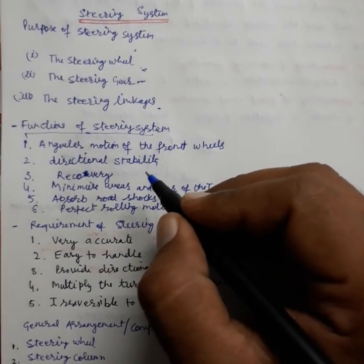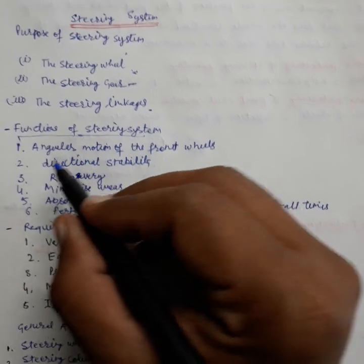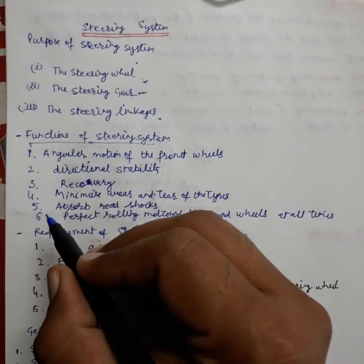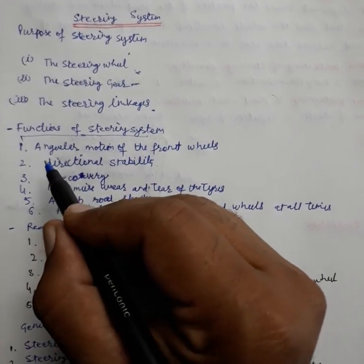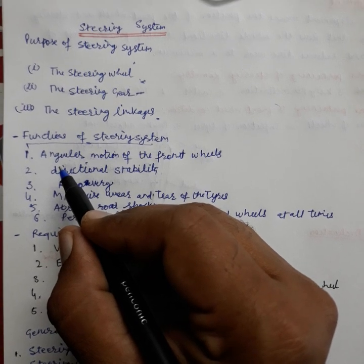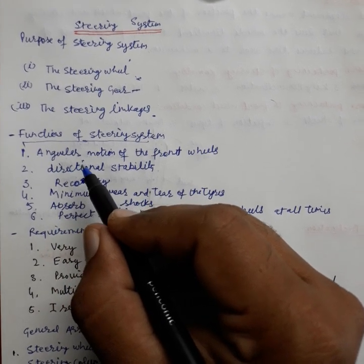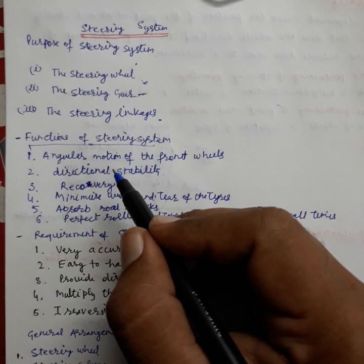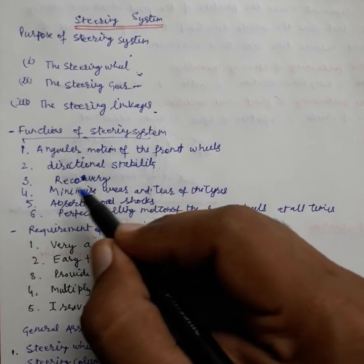Then functions of steering system. These are the following functions of steering system. First function is the primary function of steering system is to achieve angular motion of the front wheels to negotiate a turn.